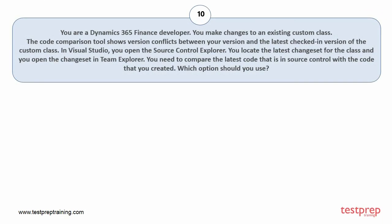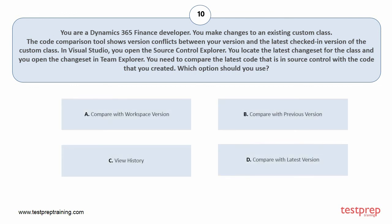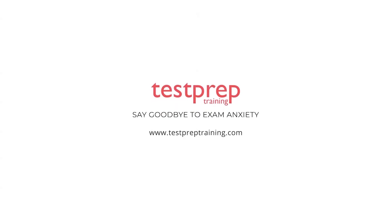Question number 10. You are a Dynamics 365 Finance developer. You make changes to an existing custom class. The code comparison tool shows version conflicts between your version and the latest checked-in version of the custom class. In Visual Studio, you open the Source Control Explorer, locate the latest change set for the class, and open the change set in Team Explorer. You need to compare the latest code in Source Control with the code that you created. Which option should you use? Your options are: A. Compare with Workspace Version. B. Compare with Previous Version. C. View History. D. Compare with Latest Version. The correct answer is option D. For more such videos, subscribe to our channel.